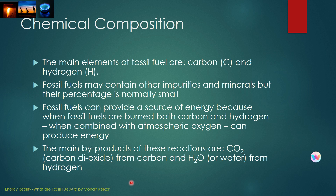The chemical composition of fossil fuels is mostly comprised of two important elements: carbon and hydrogen. Fossil fuels do contain other impurities and minerals, but their percentage is normally small and they don't contribute to the energy generated from burning fossil fuels. Fossil fuels provide a source of energy because when you burn them, both carbon and hydrogen combined with atmospheric oxygen can produce energy. The two main byproducts of burning fossil fuels are carbon dioxide or CO2, which is a greenhouse gas resulting from burning carbon, and water or H2O, which results from burning hydrogen.